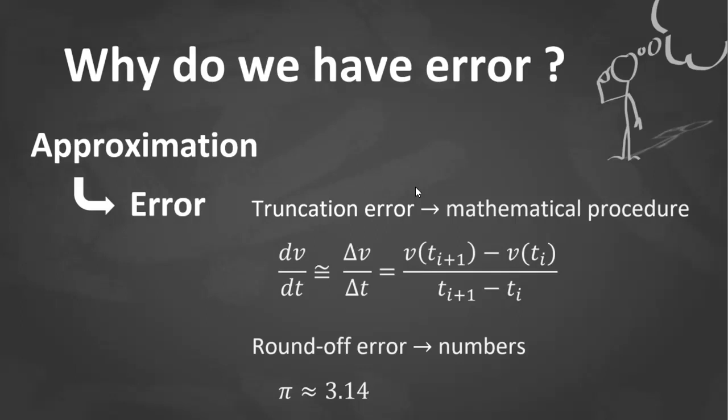Next is when the error is because of approximating exact numbers by using numbers with limited significant figures. Then the error is called round-off error. One famous example is using 3.14 to approximate pi.